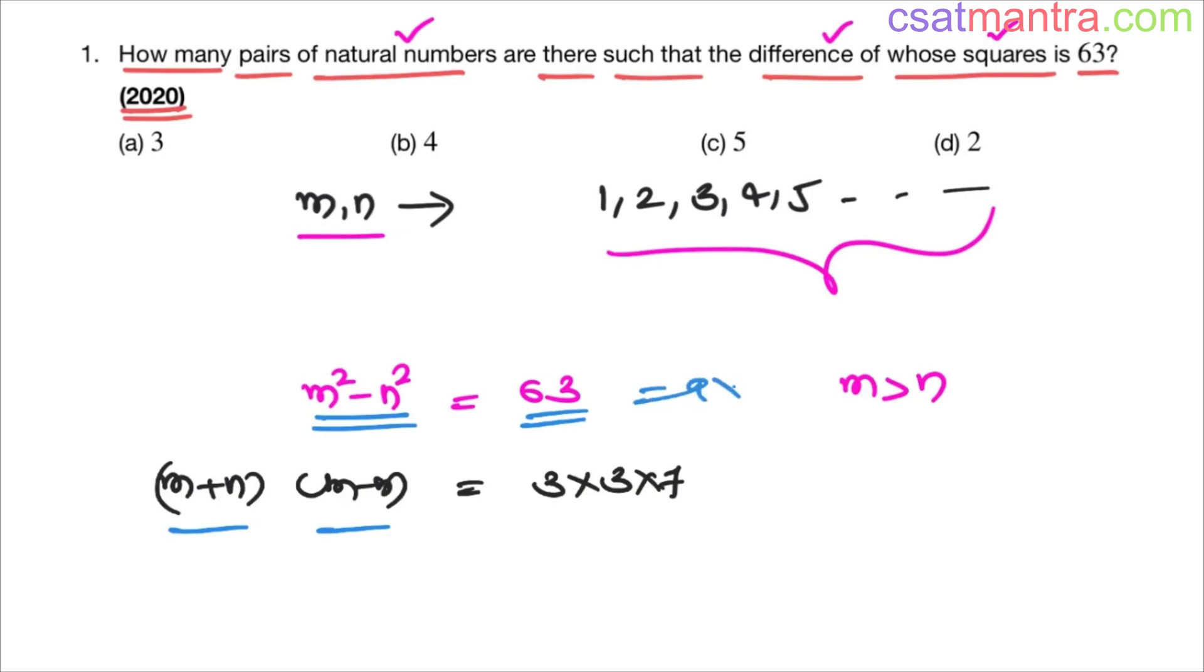Basically this is 9 into 7. I'm writing 9 as 3 into 3, so 3 into 3 into 7. We are writing 63 like this because we want to see what are all the combination of two products. Writing like this will be very helpful so that we don't miss anything.